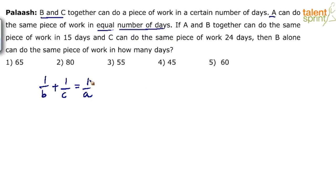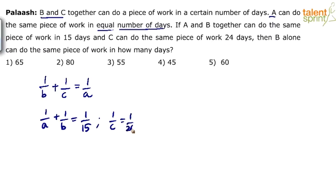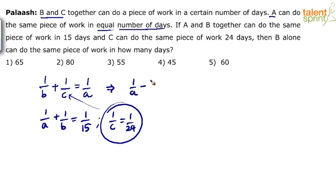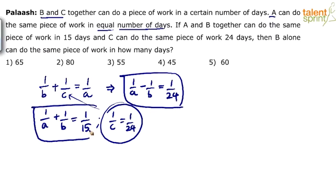A and B together can do the same piece of work in 15 days, so 1/A + 1/B = 1/15. C can do the same work in 24 days, so 1/C = 1/24. Since 1/A = 1/B + 1/C, we can substitute. Taking 1/B to the other side: 1/A - 1/B = 1/C = 1/24. So equation 1 is 1/A - 1/B = 1/24, and equation 2 is 1/A + 1/B = 1/15.